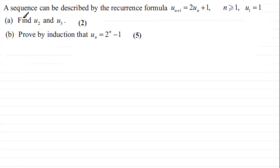And what we're going to do is find the next two terms in the sequence u2 and u3, and then in part b, proof by induction that u subscript n, the nth term in the sequence, is equal to 2 to the power n minus 1.